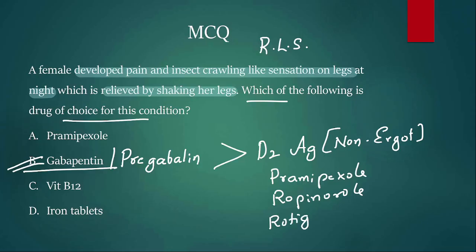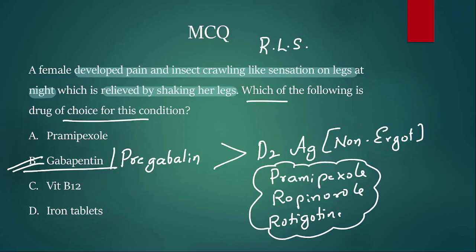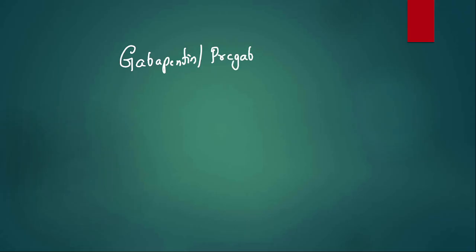Non-ergot D2 agonists like pramipexole are also used in restless leg syndrome and Parkinson's disease, but are second-line here. Vitamin B12 and iron are additional supportive drugs. Gabapentin and pregabalin are also used for neuropathic pain conditions — tell us in the comments which neuropathic pain conditions they treat.